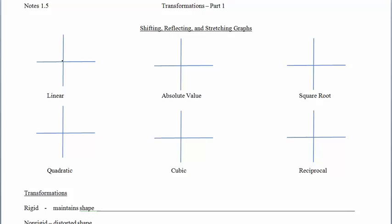We have six graphs available for six parent functions, so we're going to kind of self-assess. The linear function passes through the origin with a constant rate of change, and the equation that belongs to it is y equals x. That's our starting point.